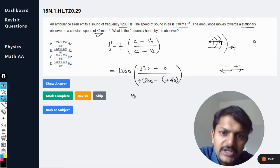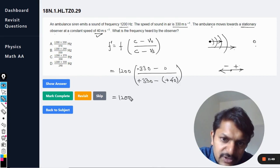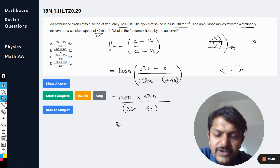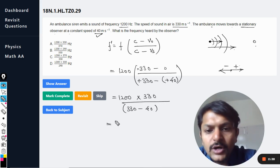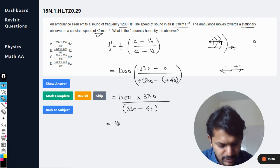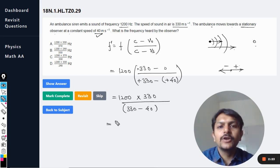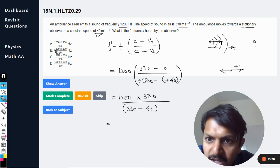So this becomes 1200 multiplied by 330 divided by 330 minus 40, and we are going to solve this now. I'm using my calculator. You can use your calculator: 1200 divided by... and the answer is coming out to be 1365.